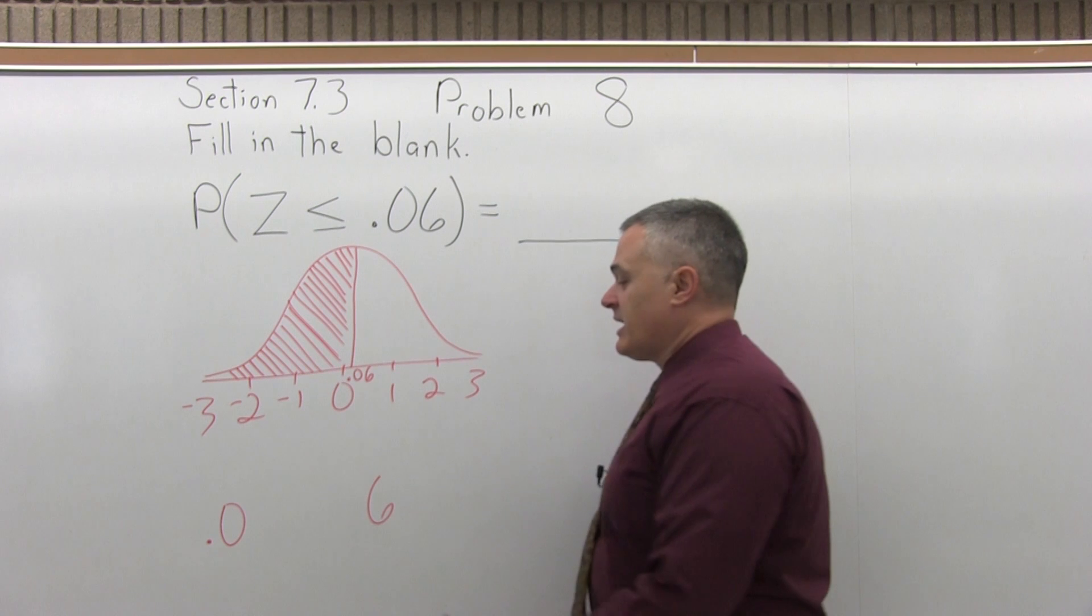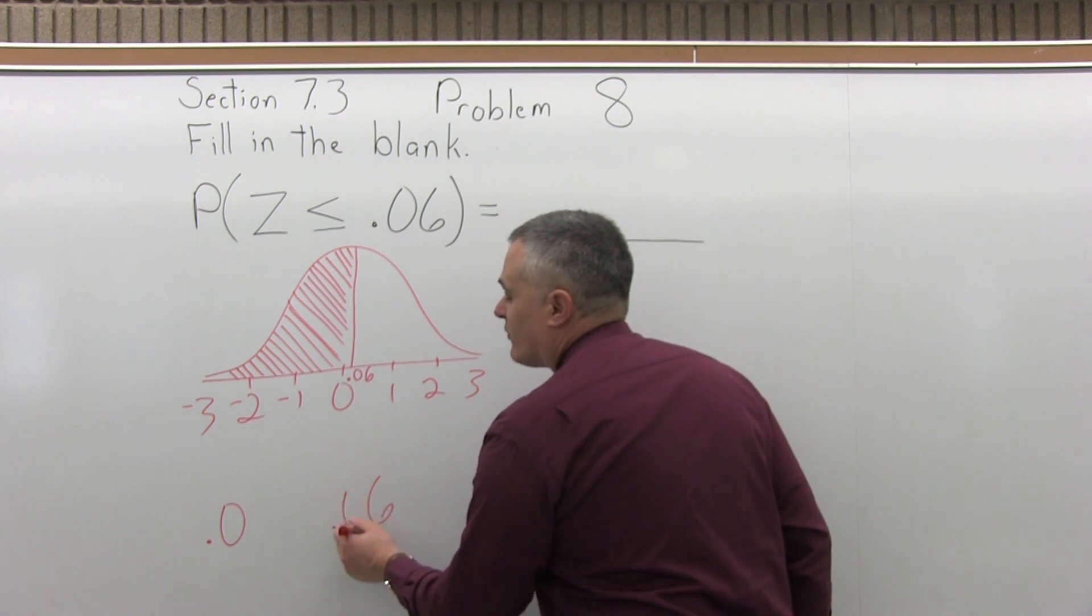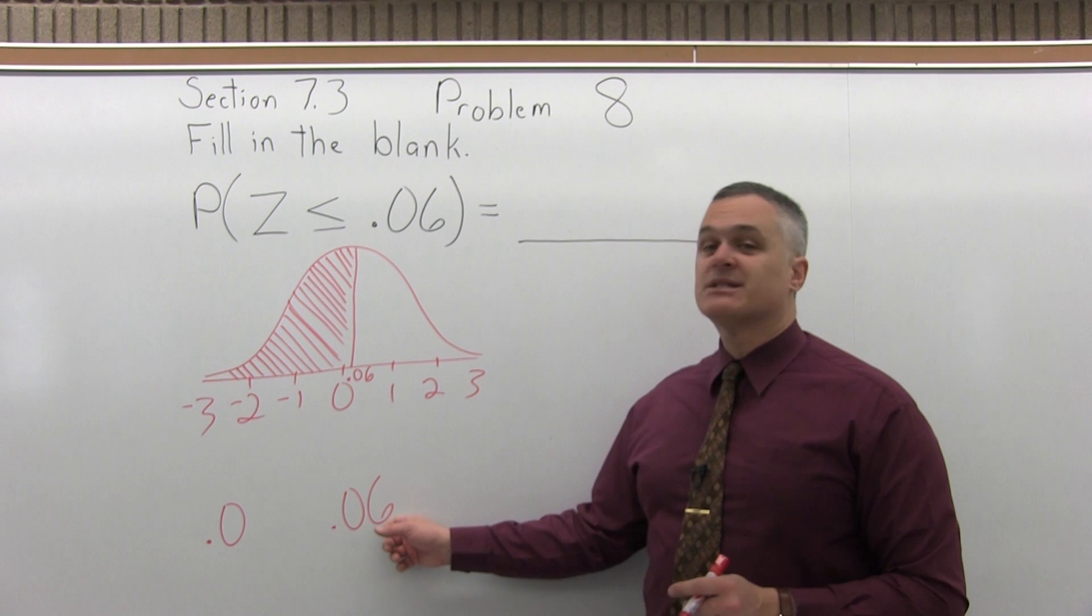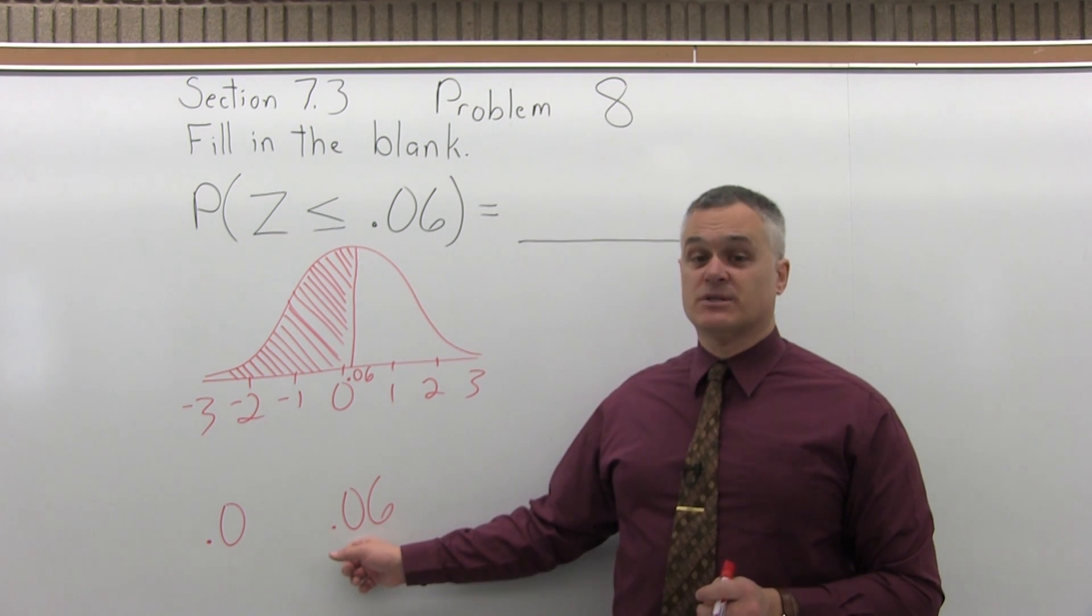The third step is to write a 0.0 in front of the rightmost digit that we pulled off. So instead of 6, it's written as 0.06.